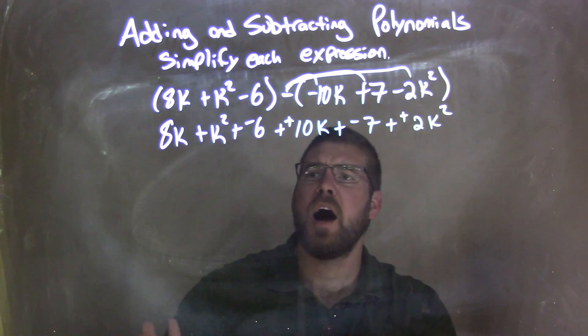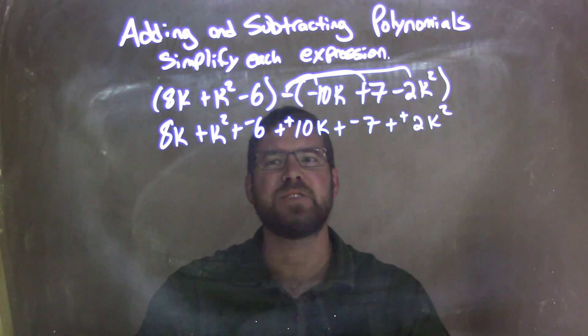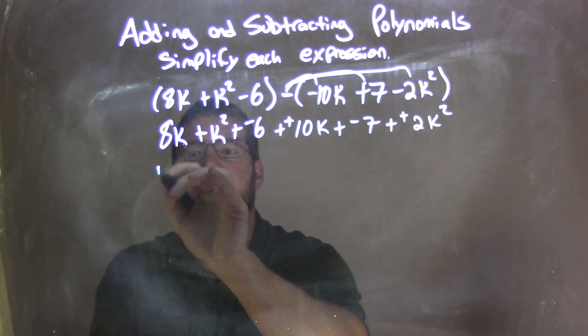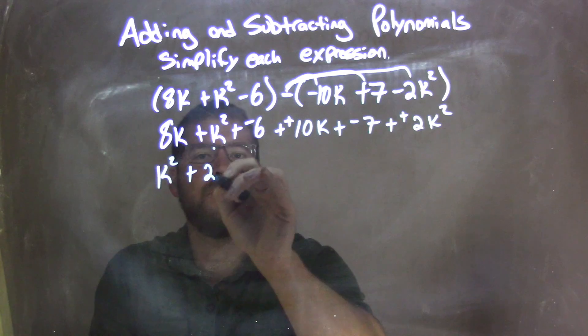Okay, now I'm going to rewrite this using the commutative property with the highest degrees first and my like terms together. So I have k squared here. I've got a dot showing I've brought it down, plus 2k squared. Don't forget the square.